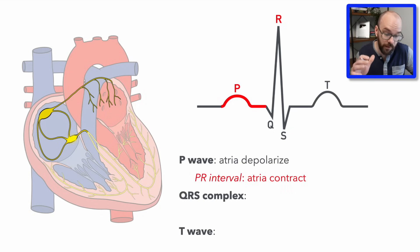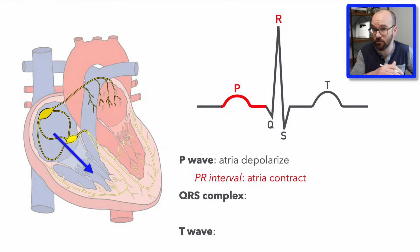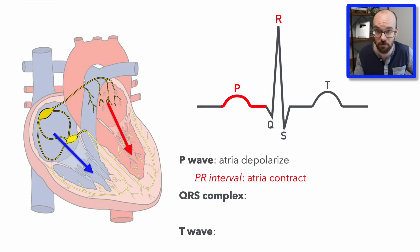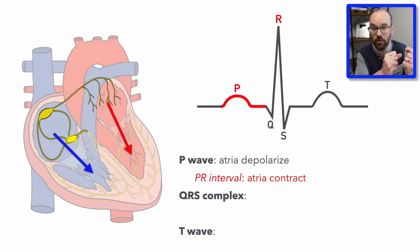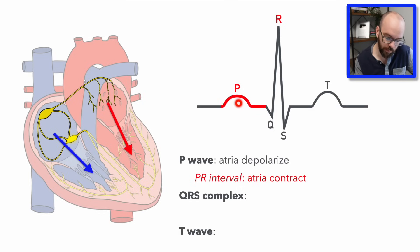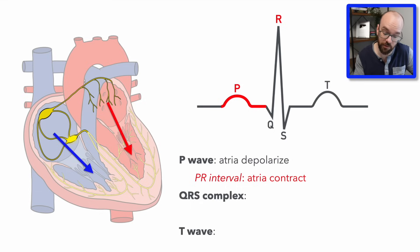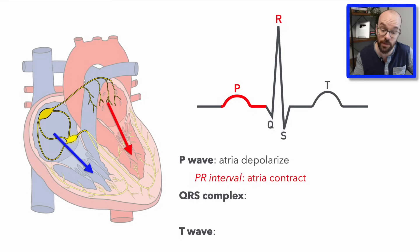During the PR interval the atria contract, sending blood from the right atrium into the right ventricle and from the left atrium into the left ventricle — squeezing out any remaining blood. Atrial contraction starts early in the P wave and lasts through this section. The PR segment specifically is where the AV nodal delay occurs, because as soon as the QRS complex begins, the ventricles start depolarizing.